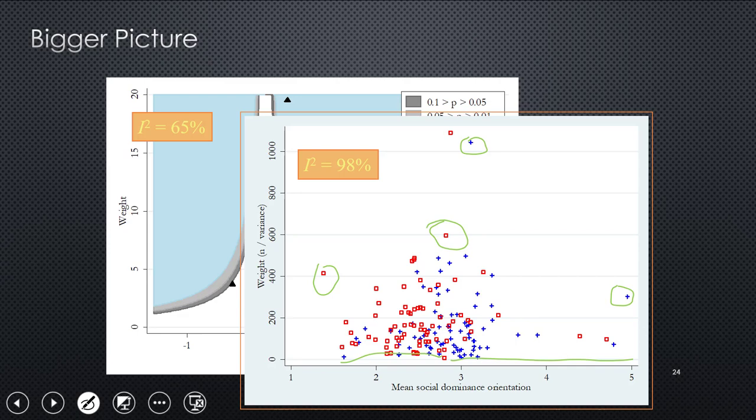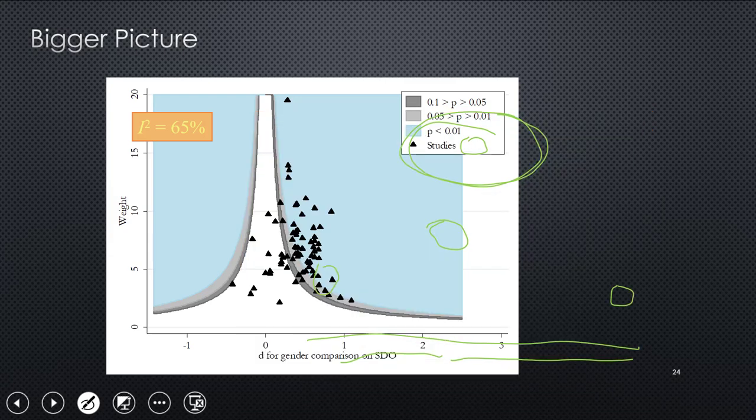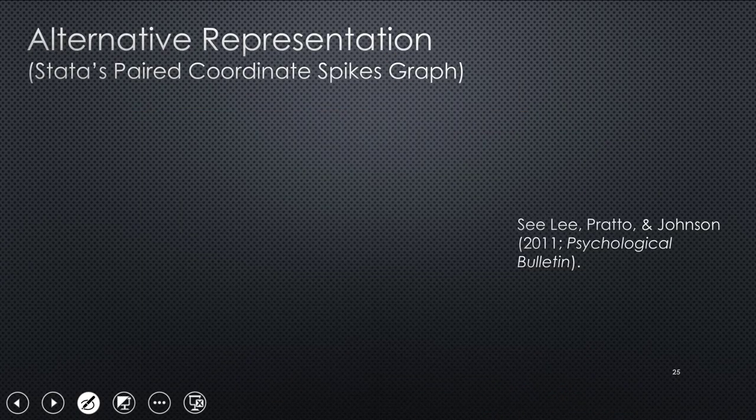And by the way, in these graphs, the weight is what I showed you earlier. So the points that are up higher on the graph, those are much larger samples and smaller variances than those at the bottom of the graph. So this is what's happening. And the very same thing with the previous graph. Larger samples up, smaller samples below.